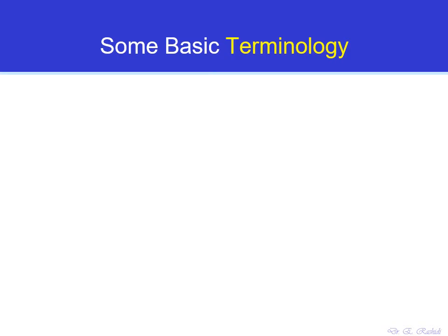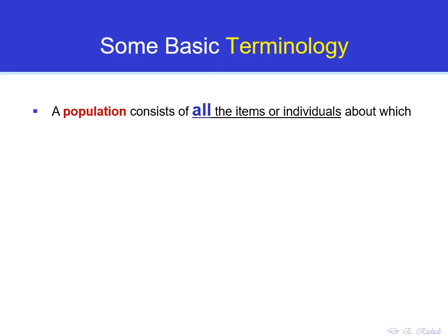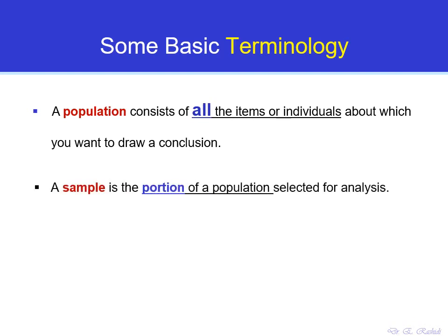Let's now learn about some basic and important terminology in statistics. In statistics, we are interested in learning and studying about a group of things — a group of people, animals, items, or anything. The whole group of those things that you are interested in studying is called the population. But in real life, because of many restrictions, we cannot afford to study the whole population. So what we do is take a portion of the population, a subgroup, and study those. That is called a sample.